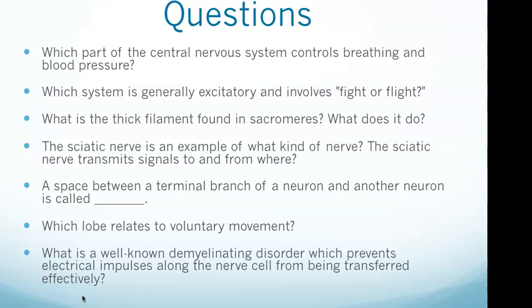We want these questions to be the lens through which we see this video, going back and forth as they are answered. The questions include: which part of the CNS controls breathing and blood pressure, what is the fight-or-flight system, what is the thick filament found in sarcomeres and its function, what type of nerve is the sciatic nerve, and what is the space between the terminal branch of a neuron and another neuron.